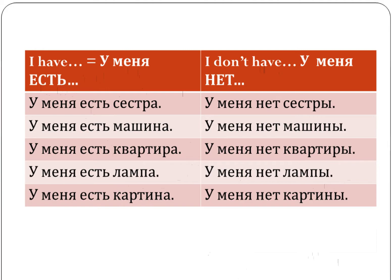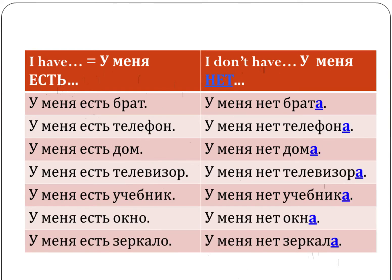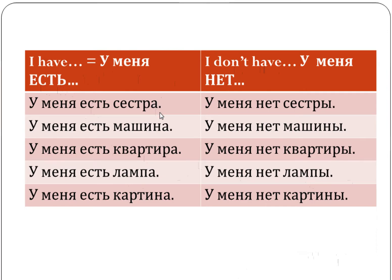So now take another minute and look at these sentences and tell me what you see. Hopefully you've noticed that the beginning is the same as before — 'I have' / 'I don't have' — but now the words do not have the nominative ending; they have a new ending. And of course my next question is why. Why did we have these words in nominative case on the left hand side, and now they have a different ending?